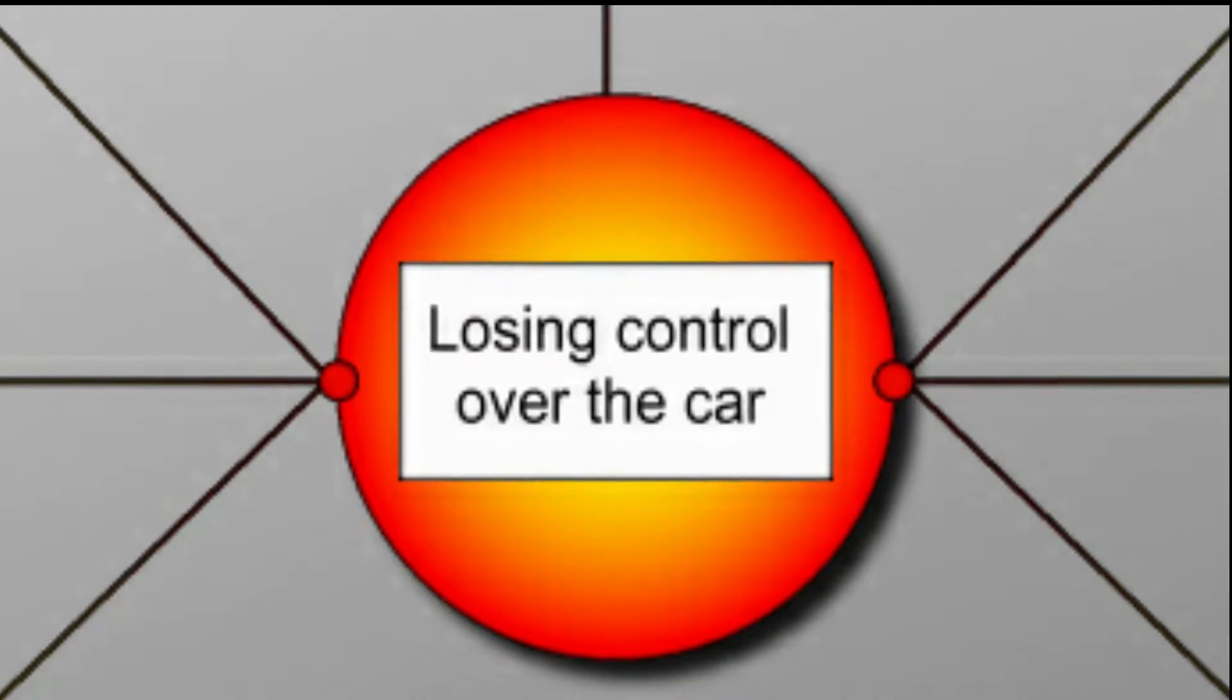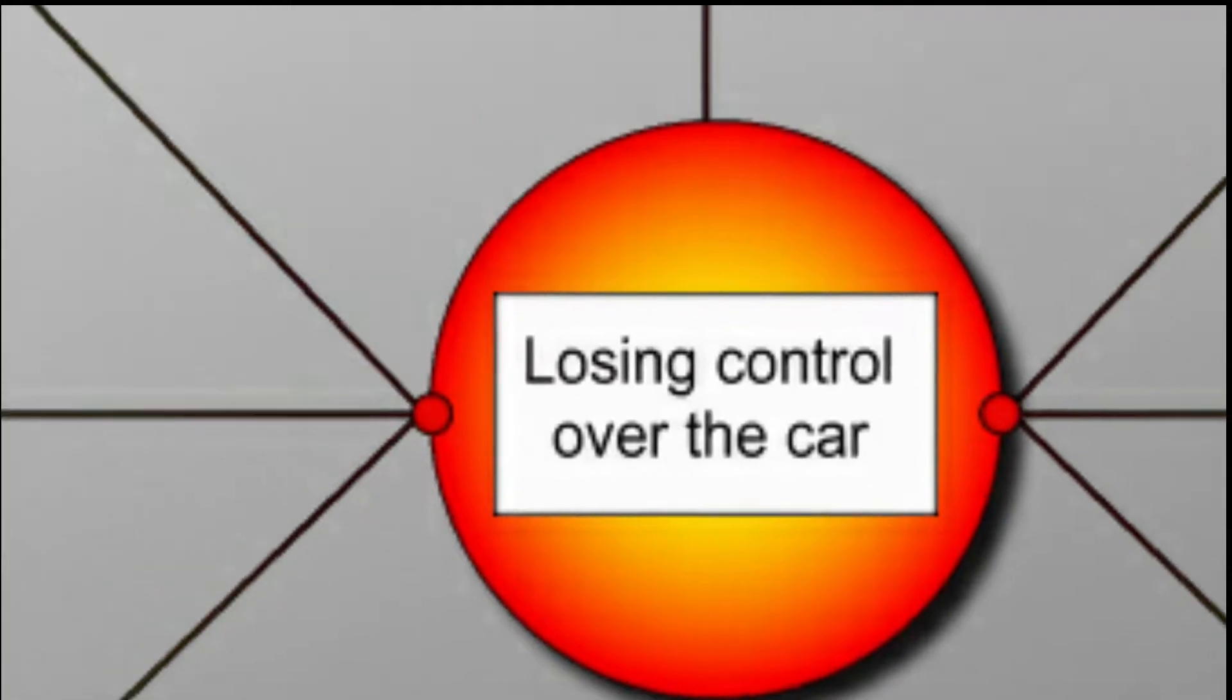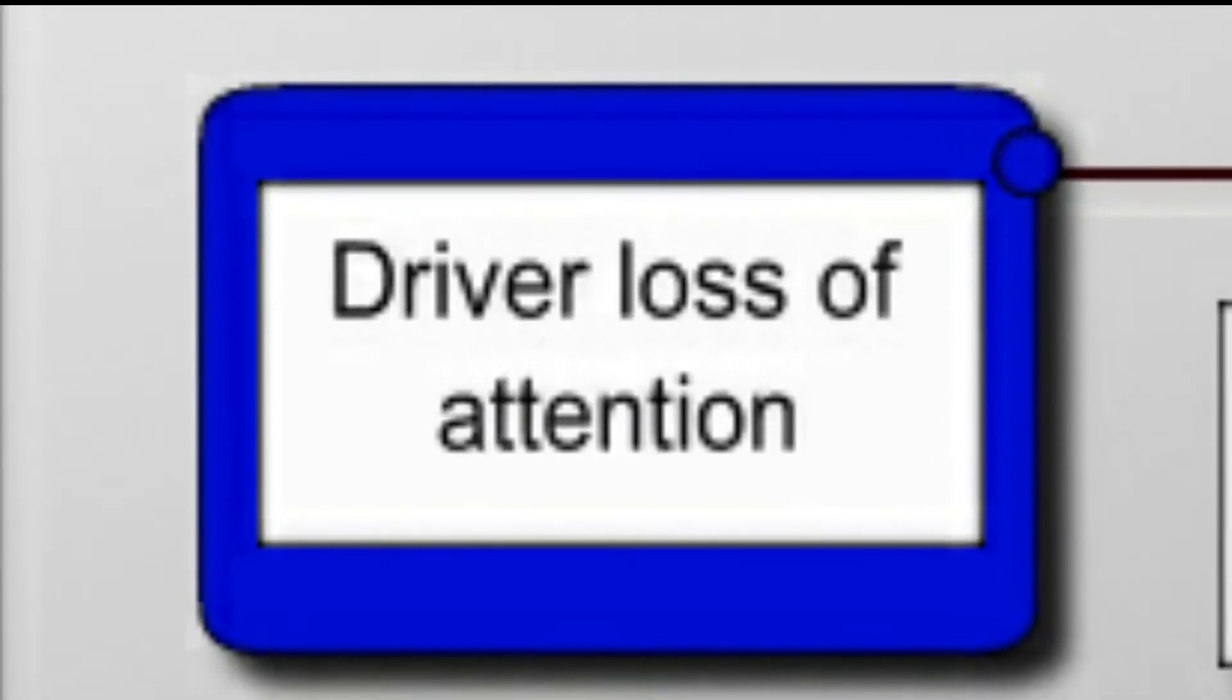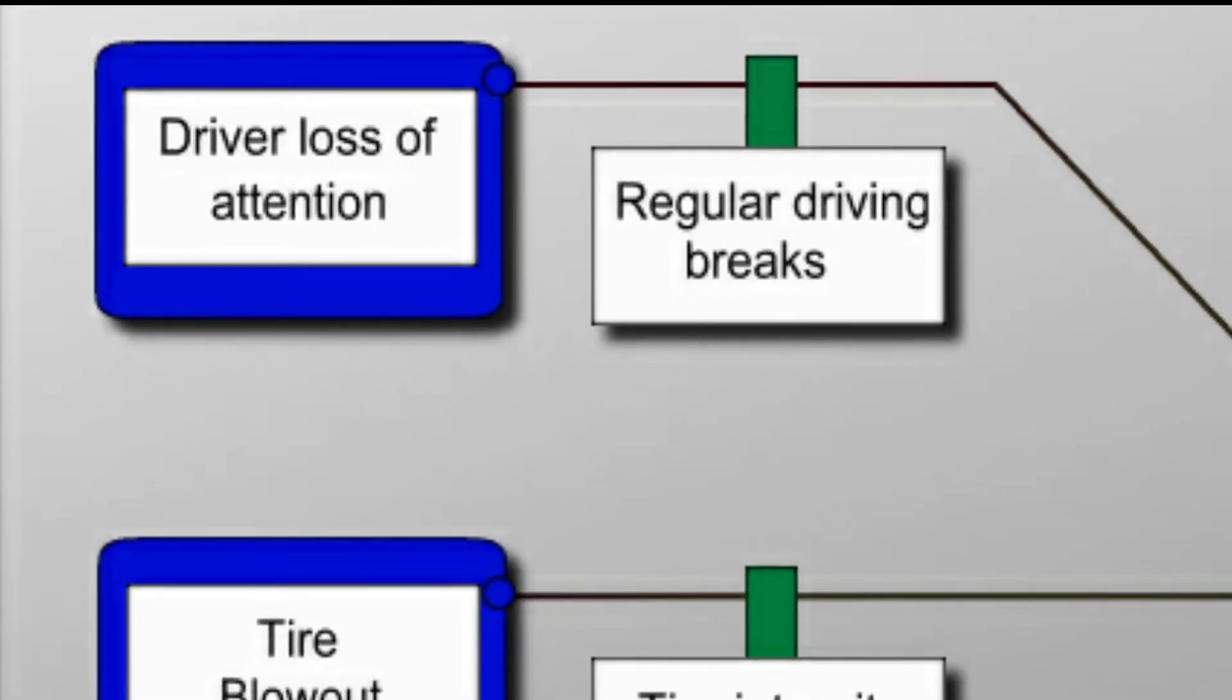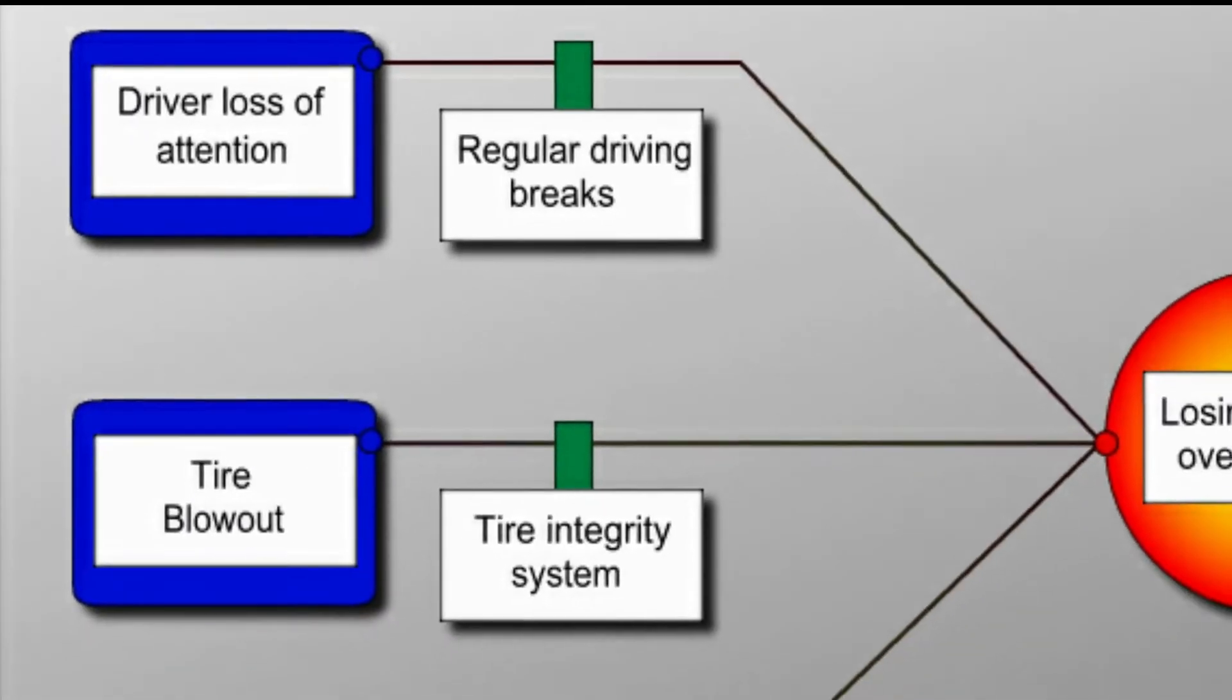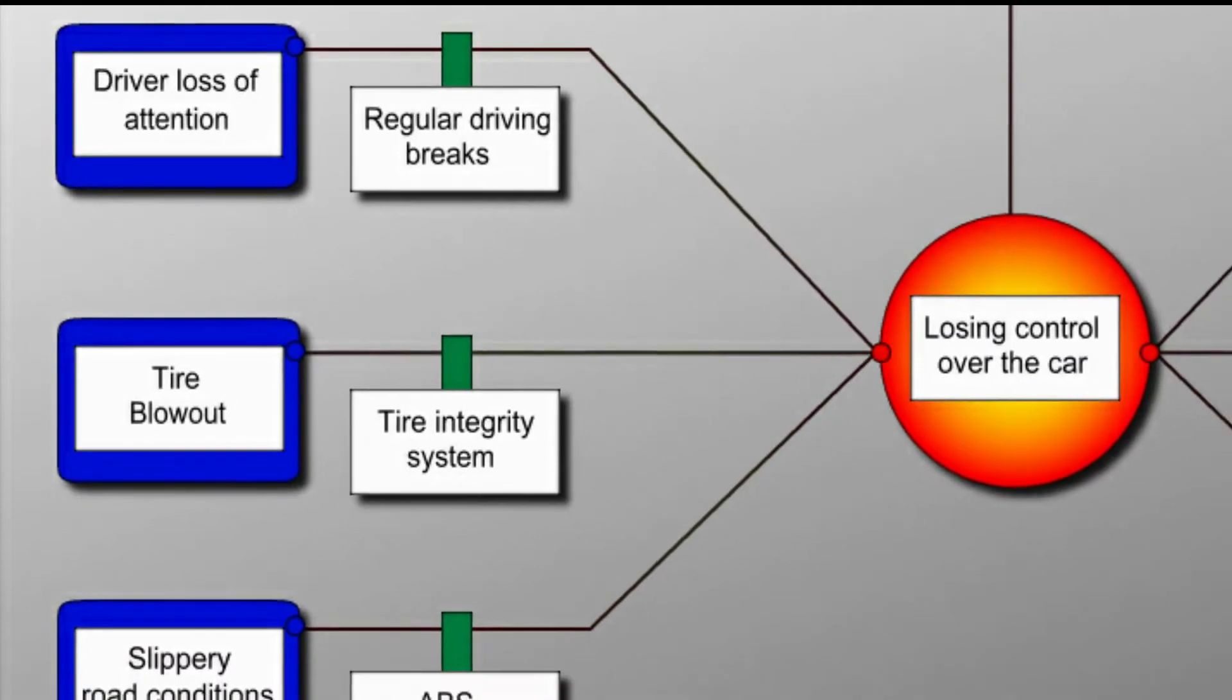The top events, of course, do not happen out of the blue. They are always caused by something. The blue threads on the left hand side represent different plausible causes for losing control over the car. For example, slippery roads can cause us to lose control over the car.